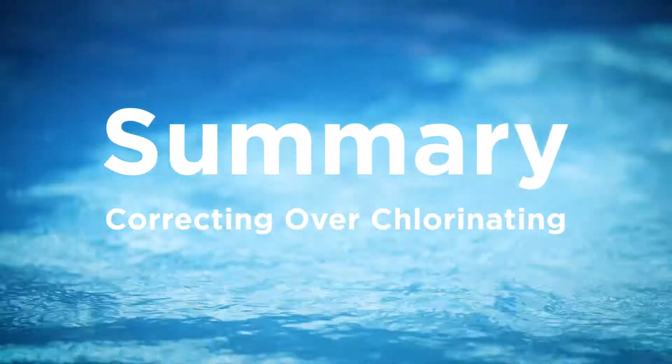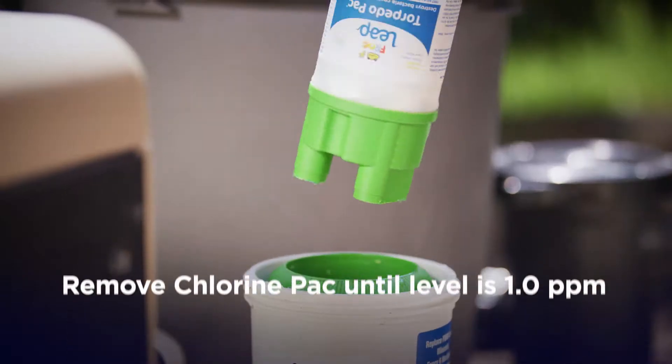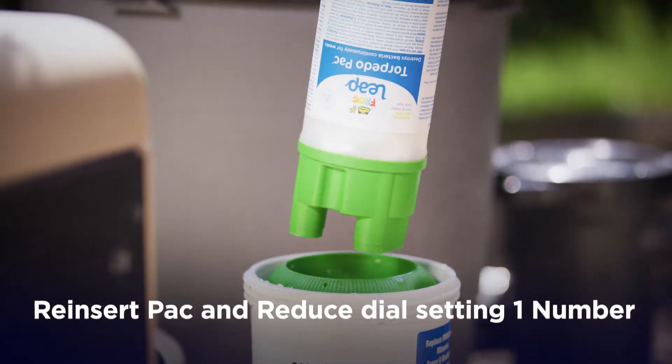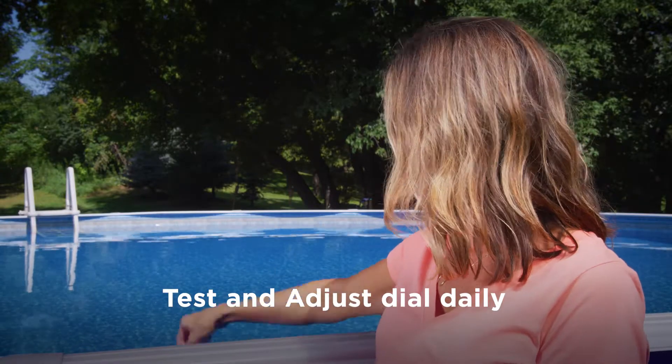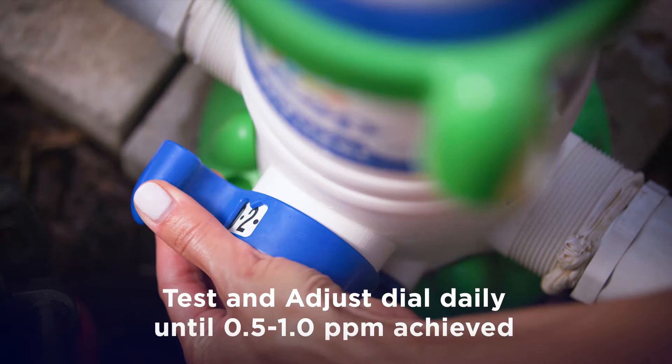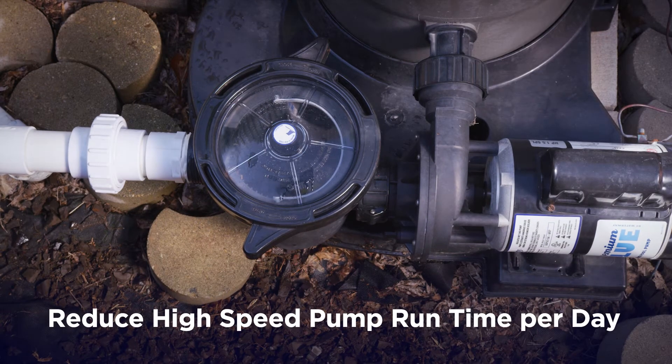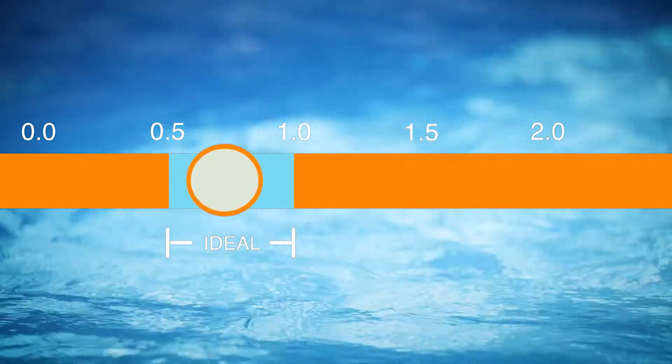Here is a quick summary of how to correct over-chlorinating: replace minerals if older than six months, remove chlorine pack until level is 1.0 ppm, reinsert pack and reduce dial setting one number, test and adjust dial daily until 0.5 to 1.0 ppm is achieved, reduce high-speed pump runtime per day, change to a larger return fitting.